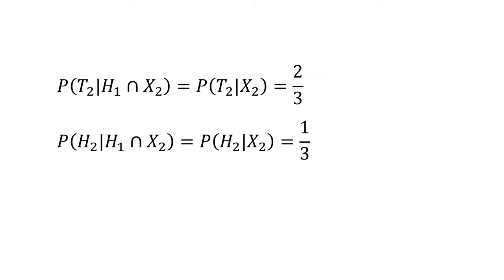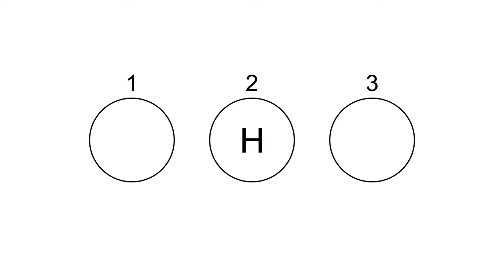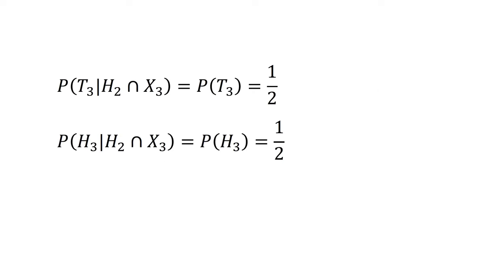We don't see the same bias if we select flip three. If we select flip three, we know that flip two was a head, but the fact that we select flip three does not tell us anything about what flip three is, as flip three does not influence the choice of flip. Whether flip three is a head or tail is independent of the choice of flip three or the outcome of flip two. Accordingly, the probability of a tail on flip three given there's a head on the second flip and you've picked the third flip simply equals the probability of a tail on flip three, which equals one half. Similarly, the probability of a head on flip three given there's a head on flip two and we've picked flip three simply equals the probability of a head on flip three, which also equals one half.